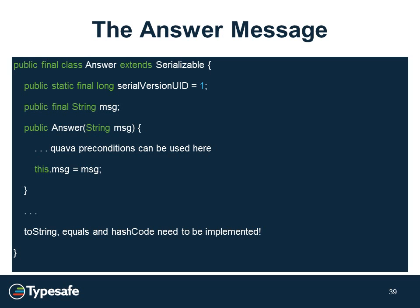The next message is the answer message — very much the same thing. You might ask why not write an abstract class and have these extend it. You could do that, but in reality a lot of times a message may contain extra variables or parameters. I wanted to identify these as separate messages so you could get the idea. This is essentially the answer message that will be responded back to the student.